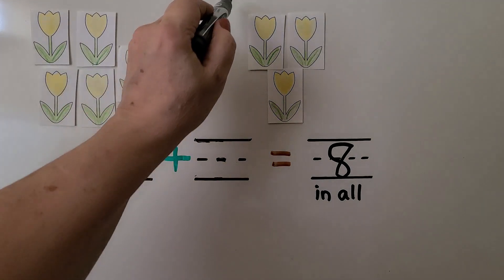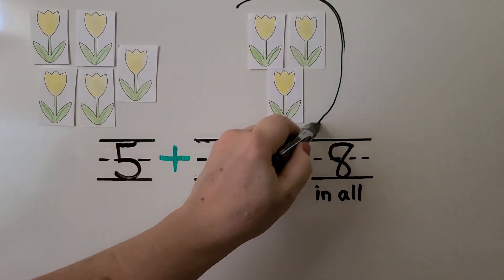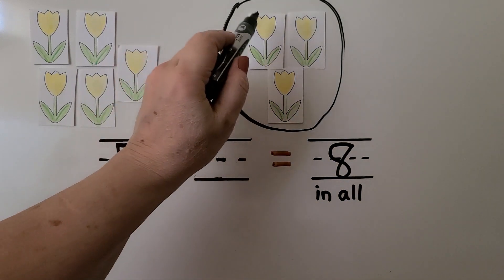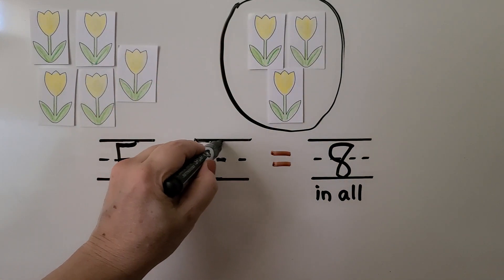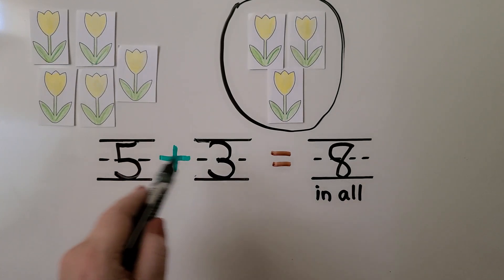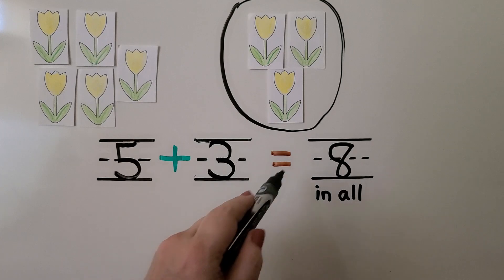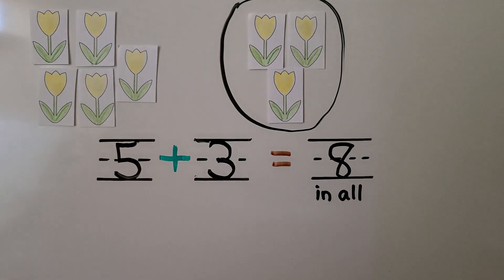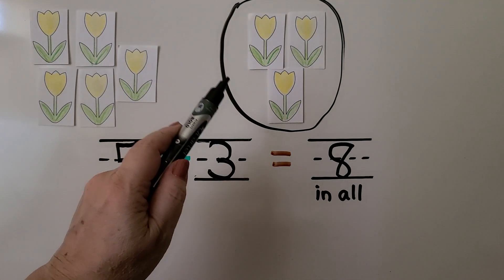Here's the five. He planted these flowers. That's one, two, three. We can write the three. Five plus three. Five plus three is equal to eight. He planted three flowers.